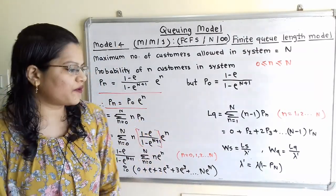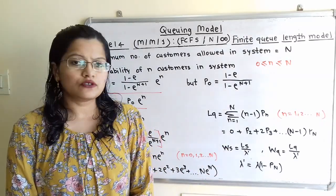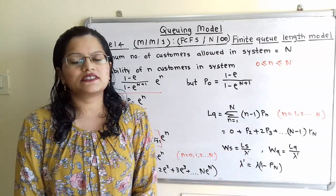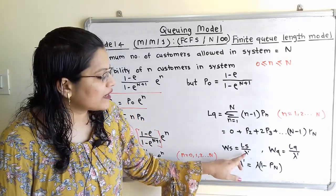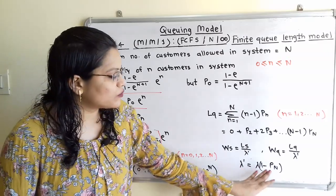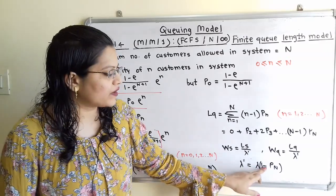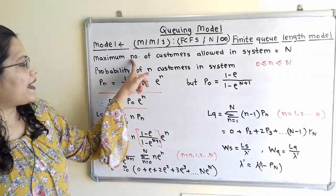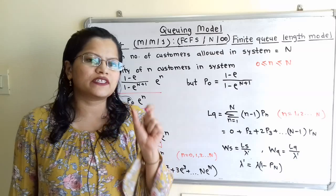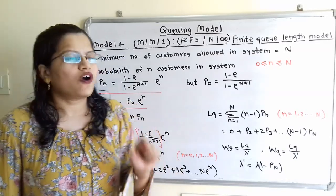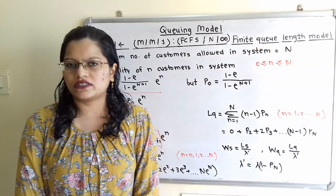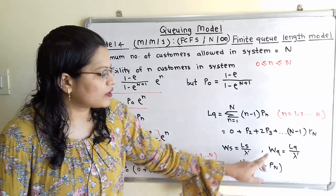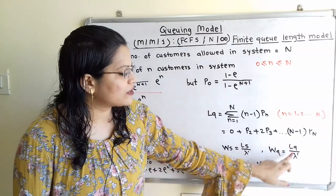The waiting time in system is Ws = Ls / λ', where λ' is the effective arrival rate, calculated as λ' = λ × (1 − P(N)). Here P(N) is the probability that the maximum number of customers N are in the system. The waiting time in queue is Wq = Lq / λ'.